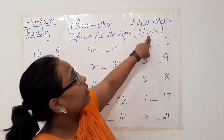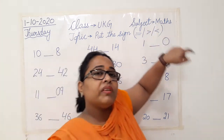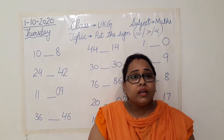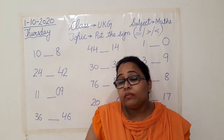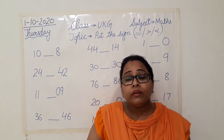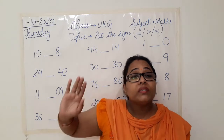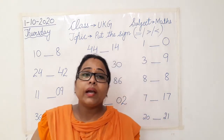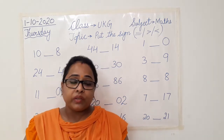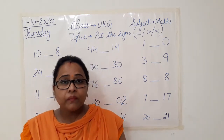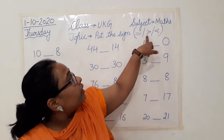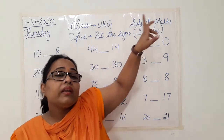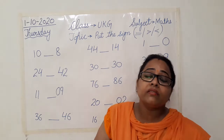Now next is greater than. What is the meaning of this sign? I told you — a crocodile mouth. Where will the mouth open? Towards the bigger number. The crocodile's mouth opens towards whichever number is big. This is what I told you. So this is the greater than sign, and this is the less than sign. Less than sign is different and greater than sign is different.